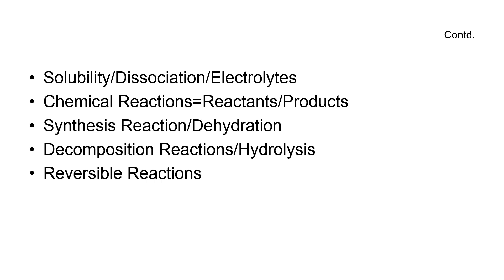The movement of anions and cations in opposite directions within the solution results in a current — the passage of charges. Chemical reactions are defined as processes that involve rearrangement of the molecules or ionic structure of substances, changing their chemical properties. In a chemical reaction, substances that combine are called reactants, and the results of the process are the products. In a chemical reaction, bonds are either formed, broken, or rearranged to change chemical properties.